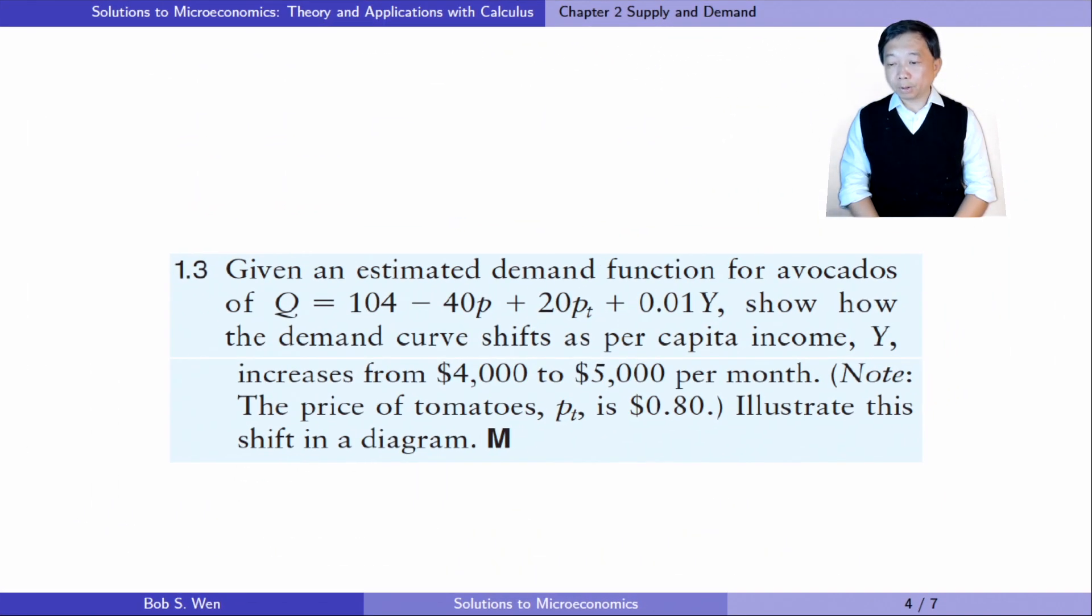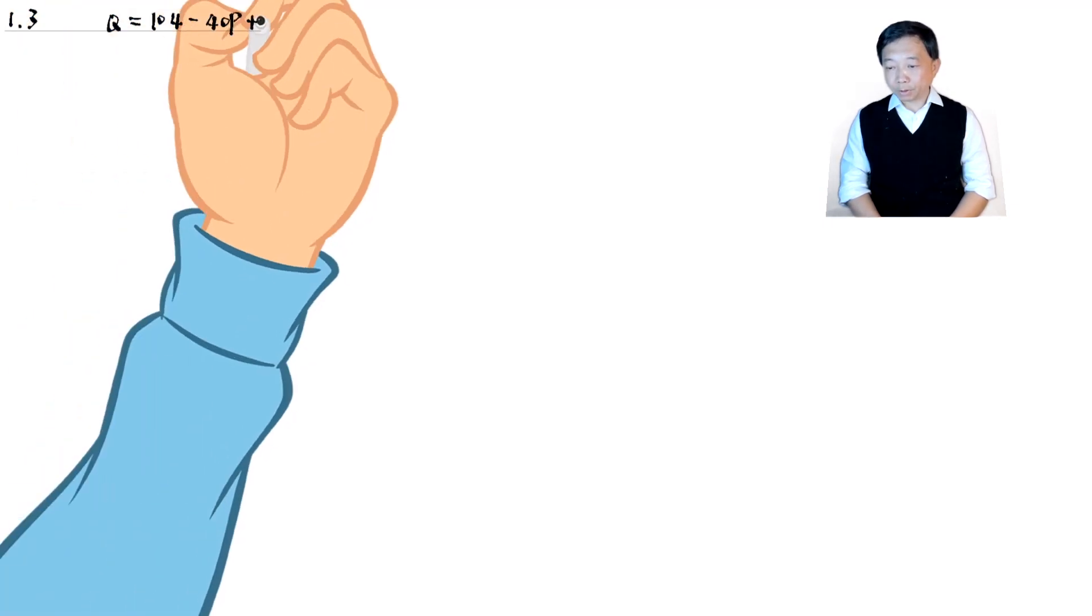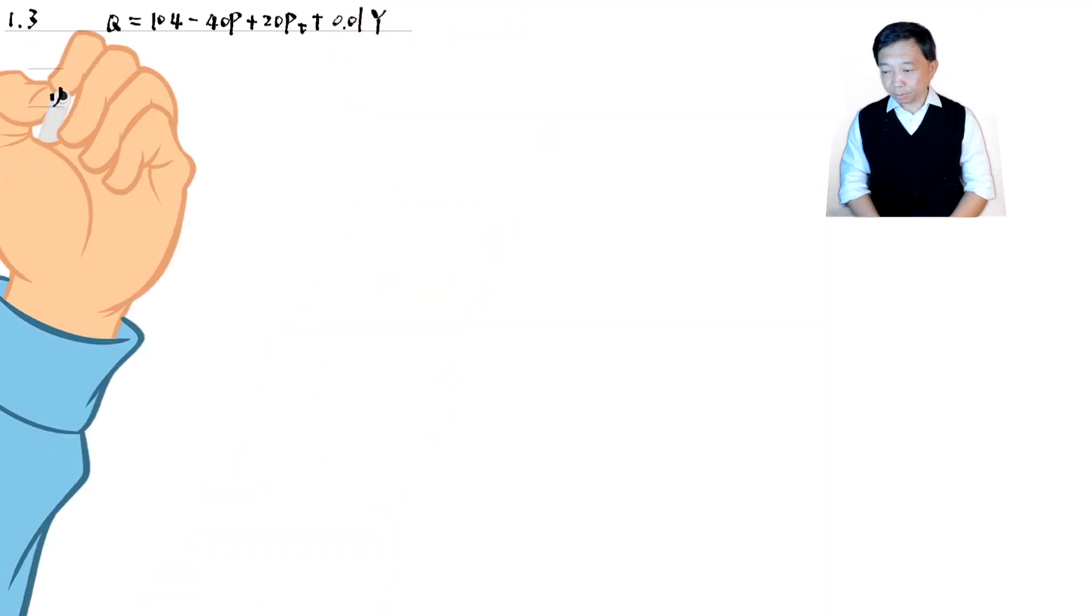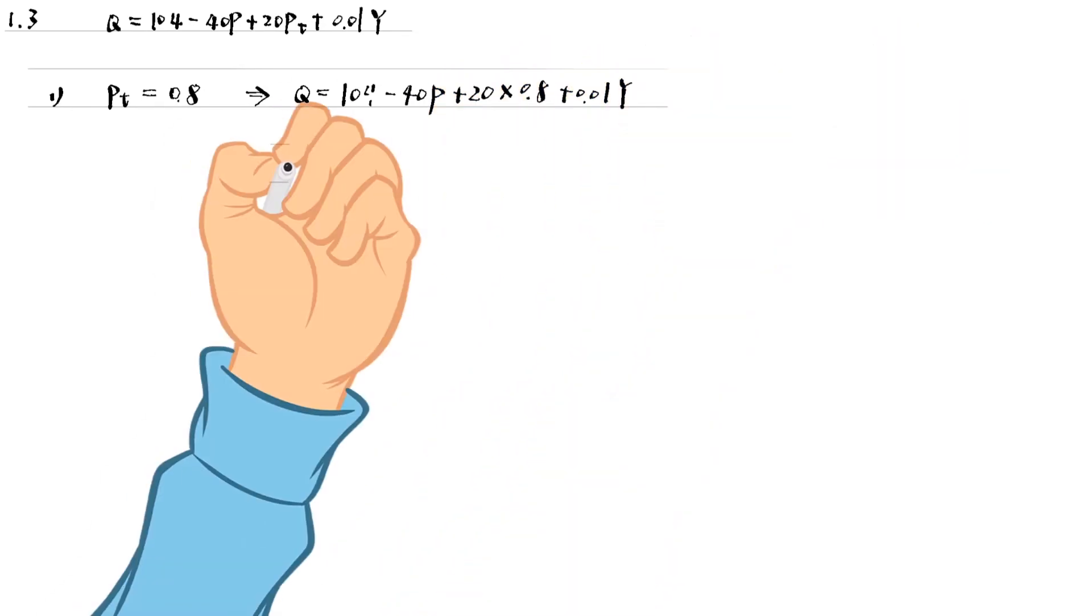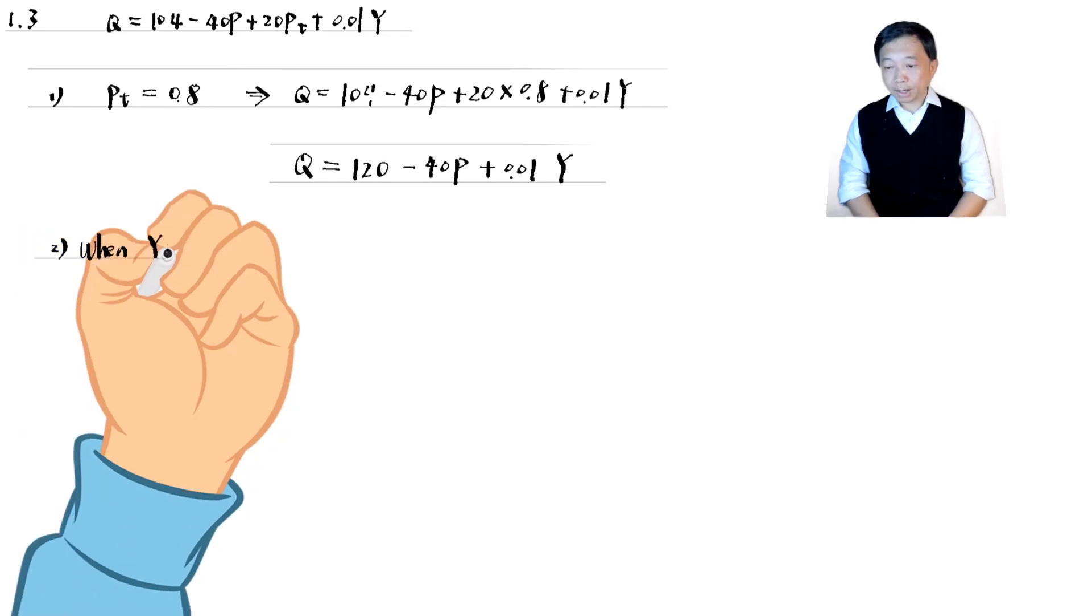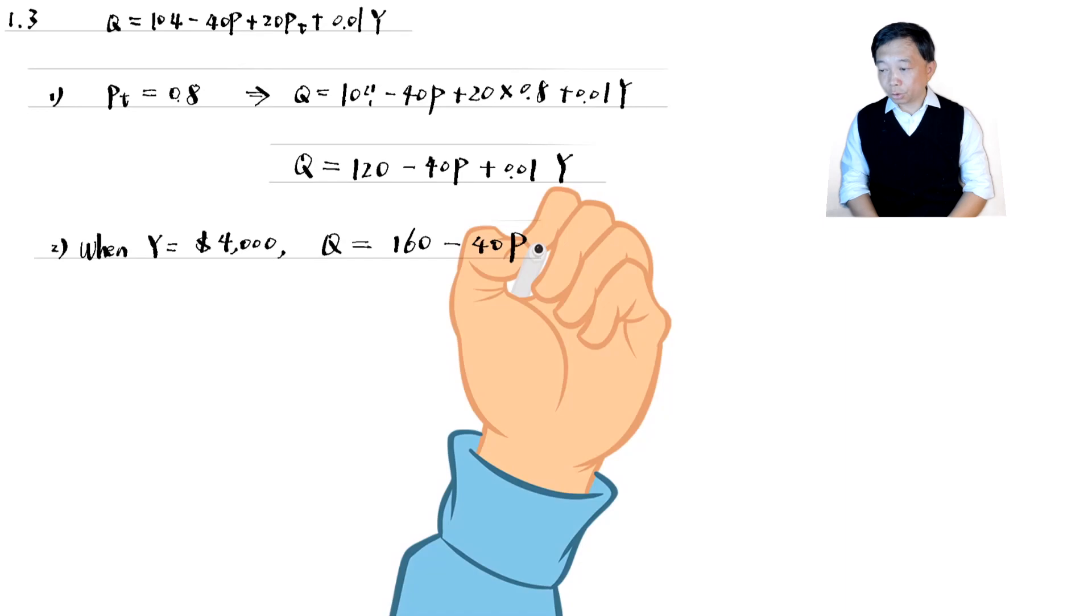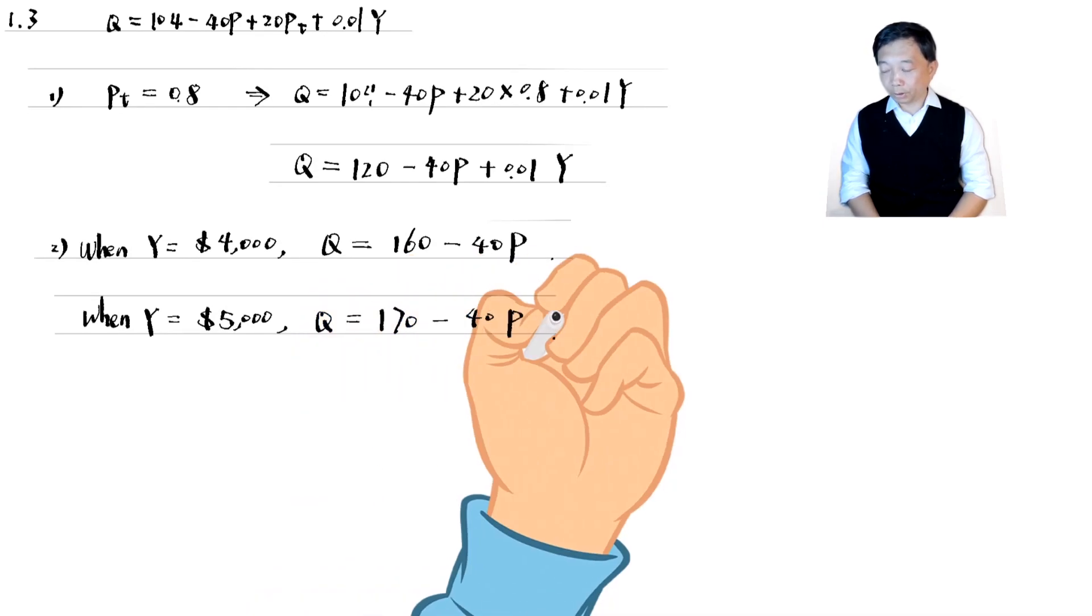Let's solve exercise 1.3. Given an estimated demand function for avocados, which shows how the demand curve shifts as per capita income y increases from $4,000 to $5,000 per month, illustrate this shift in a diagram. First, we hold the price of tomatoes constant at $0.8 by substituting the value into the equation. In the second step, we obtain the demand functions for the two incomes by substituting the income values into the equation. Now, we have the equations for the demand curves.